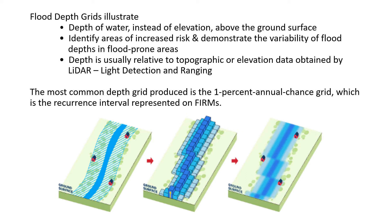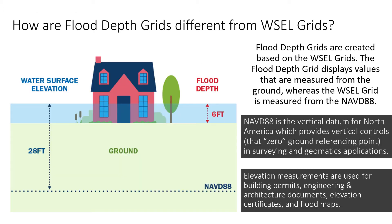Depth is usually relative to topographic or elevation data obtained by LIDAR, or Light Detection and Ranging Collection. The most common depth grid produced is the 1% annual chance grid, which is the reoccurrence interval represented on FIRMs. Flood depth grids are created based on the WSEL grid. The flood depth grid displays values measured from the ground, whereas the WSEL grid is measured from the NAVD-88, which is the fixed zero elevation for North America.